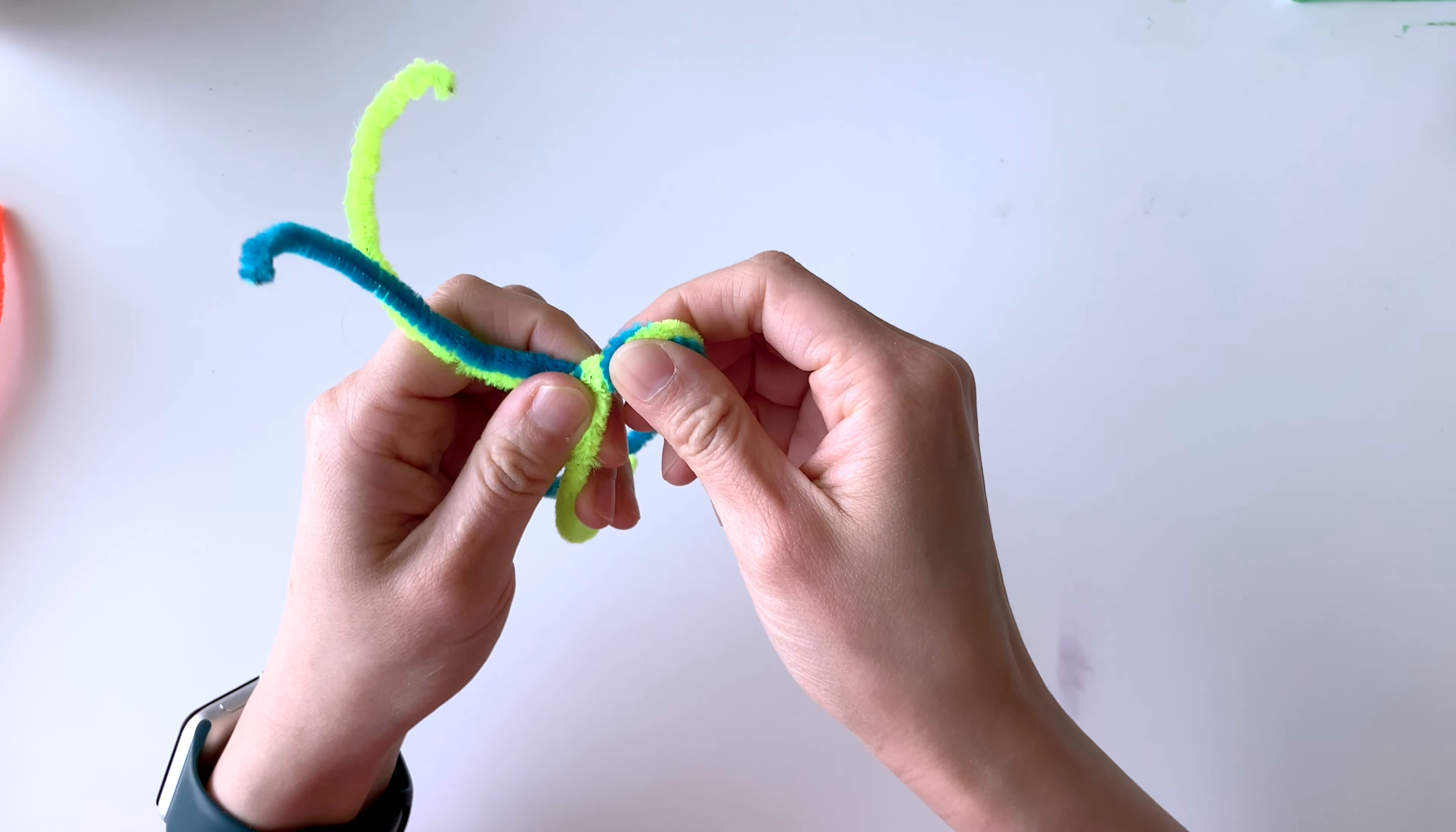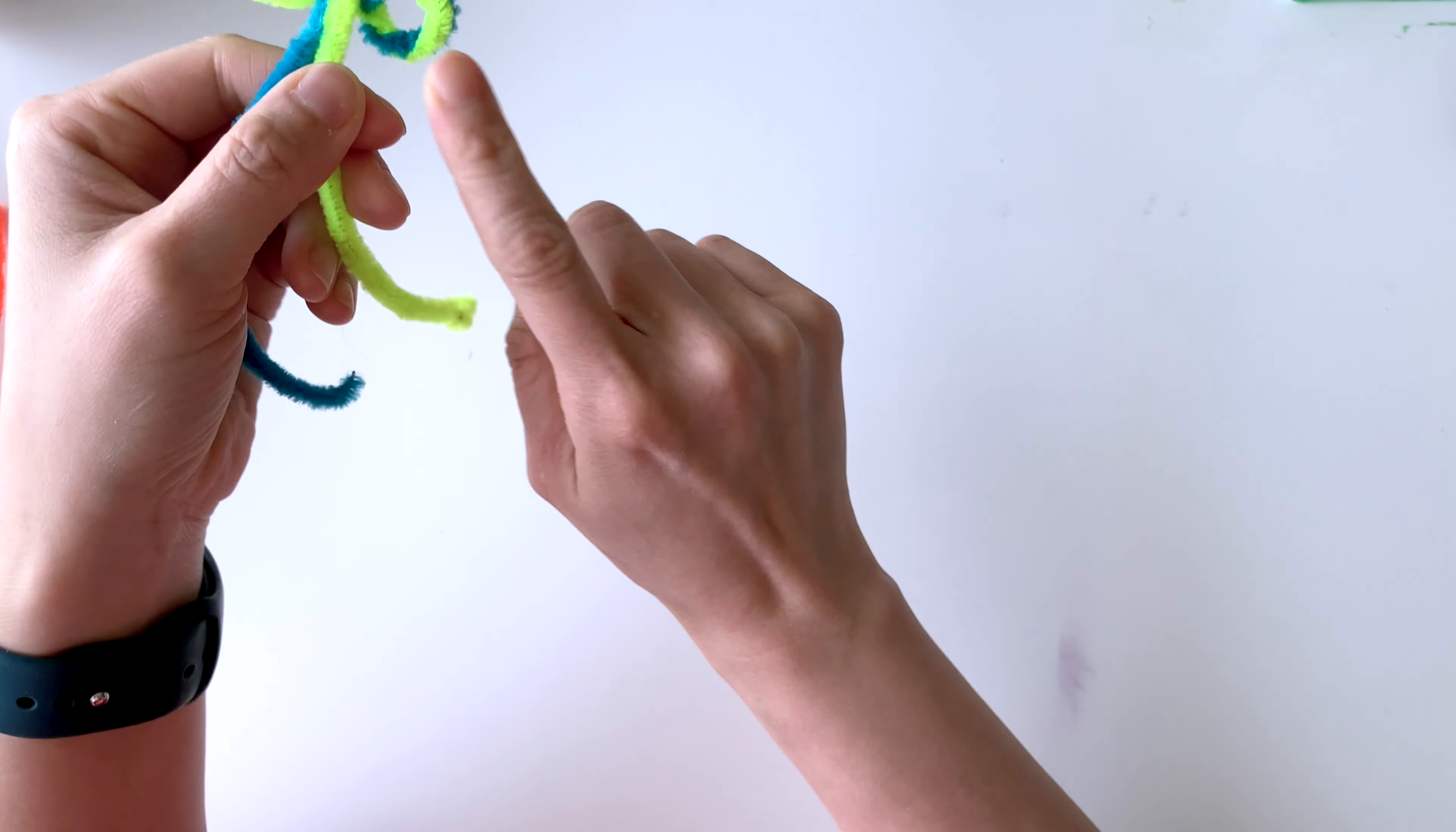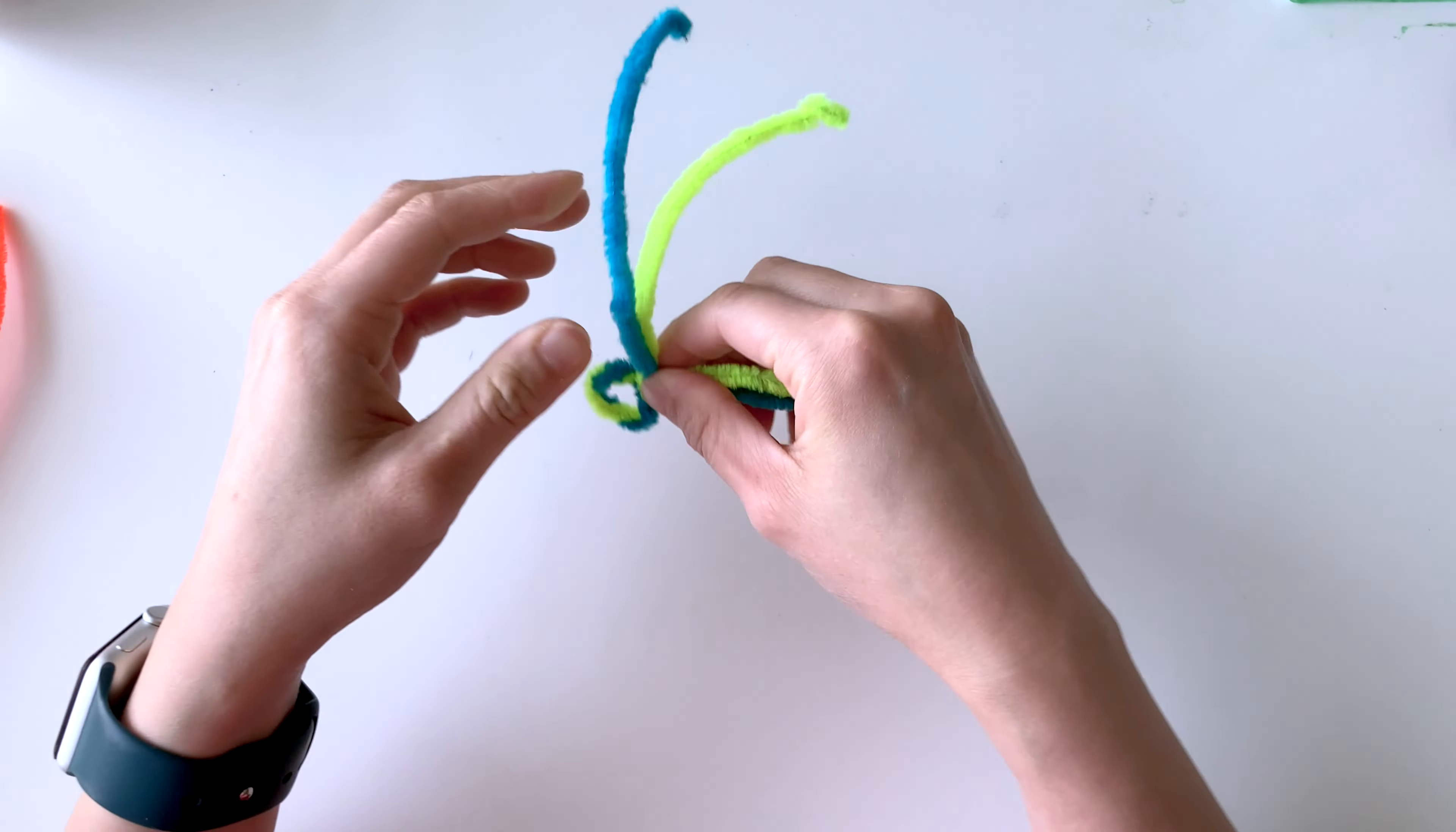But there you go, there's the ring where the finger is going to go through. You could always use the child's finger or you can use a pencil or something cylindrical so you can figure out how big the ring will be. And then I just did a twist and I'm just doing some minor shaping.